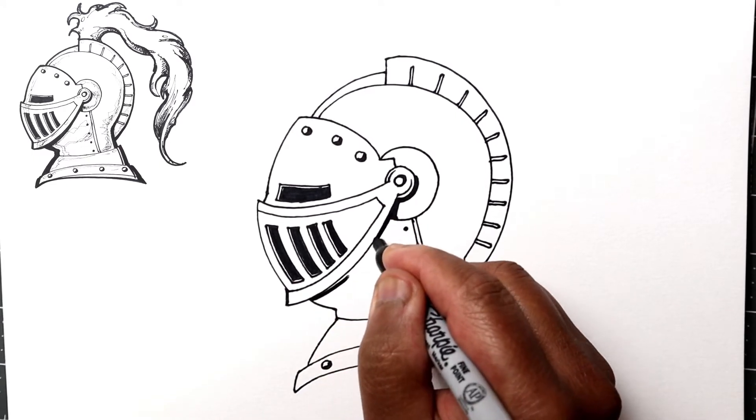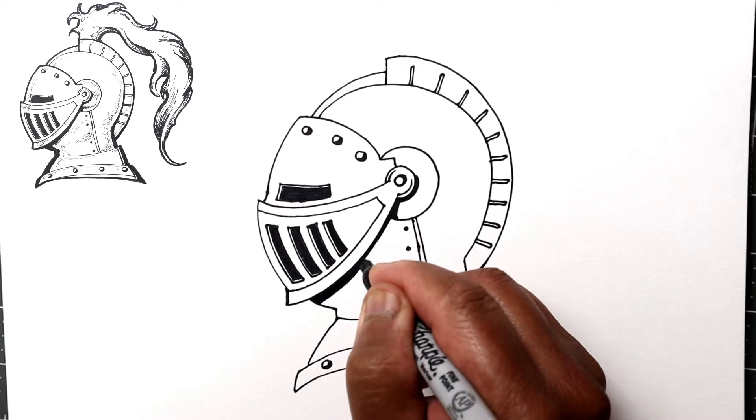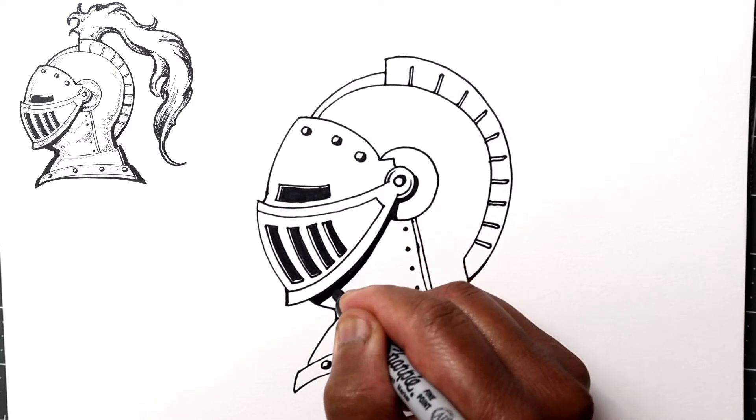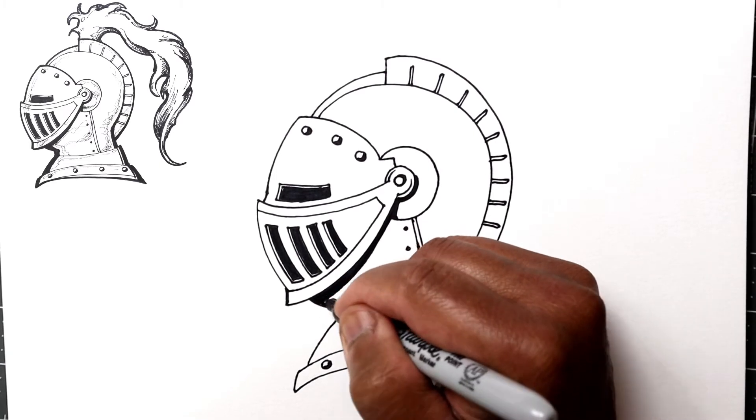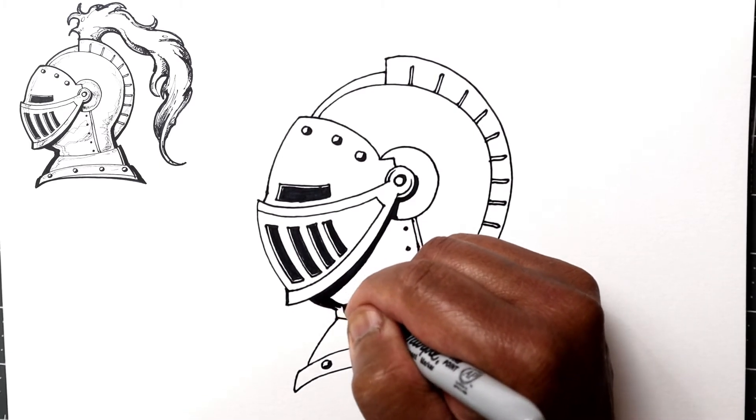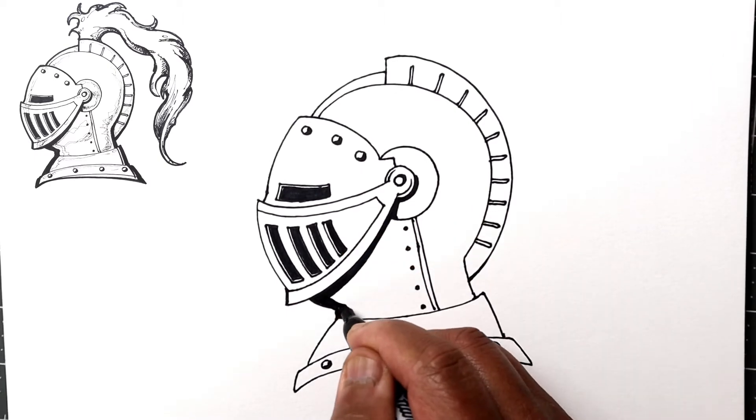Let's do that, and this will just make it look more three-dimensional. Maybe add a little bit of shadow here, right along the left side.